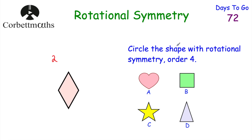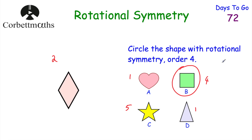Which of these shapes has order of rotational symmetry 4? We have a heart, a square, a five-pointed star, and an isosceles triangle. The heart lands on itself once — order 1. The star lands on itself five times — order 5. The isosceles triangle lands on itself once — order 1. The square lands on itself four times — order 4. So you would circle the square.